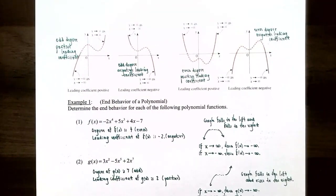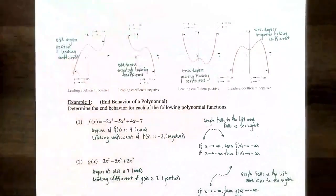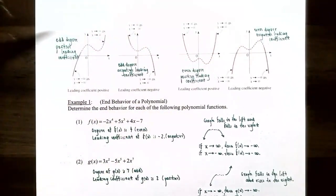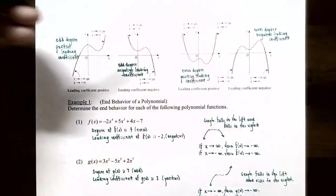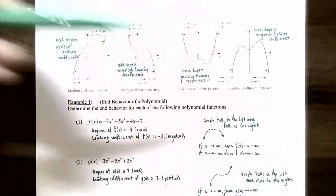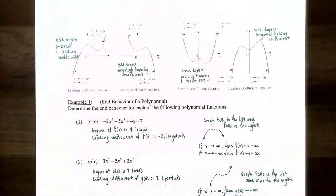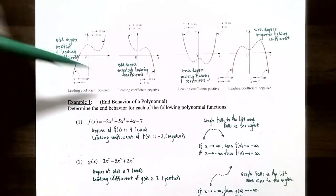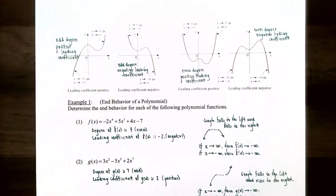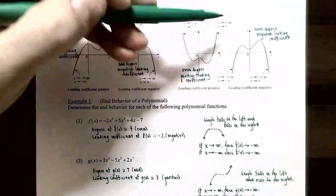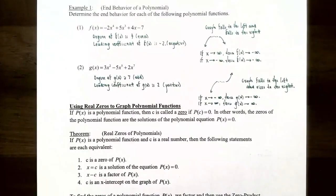Case 4: even degree with a negative leading coefficient. As x approaches negative infinity, the polynomial function decreases without bound, so y approaches negative infinity. On the far right end, the graph also decreases without bound, so y approaches negative infinity as x approaches positive infinity. For even degree, both ends have the same behavior — either both up or both down.